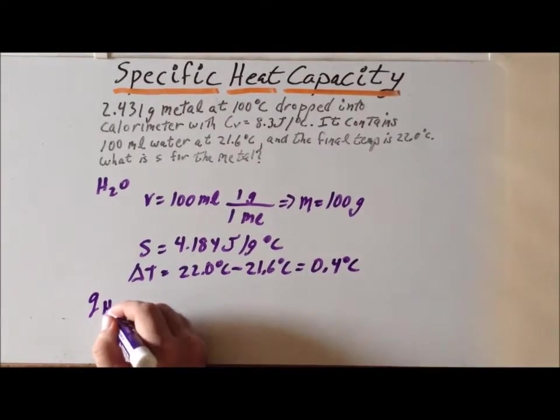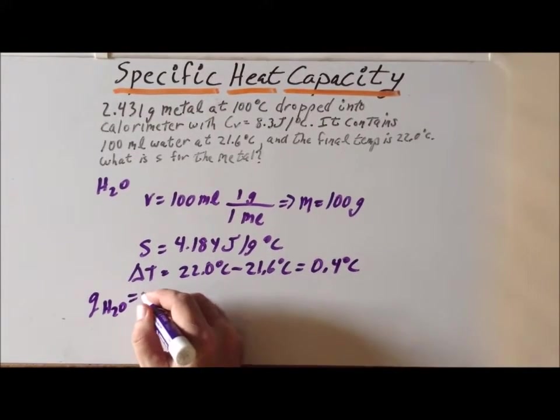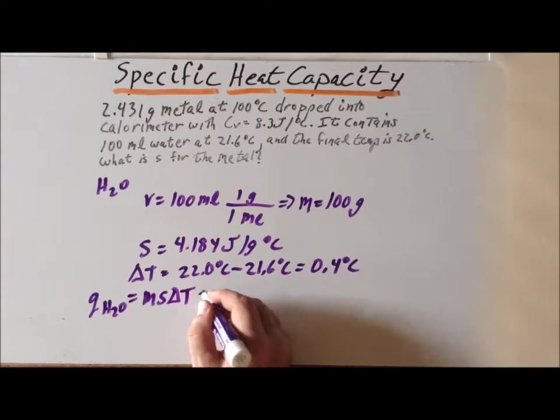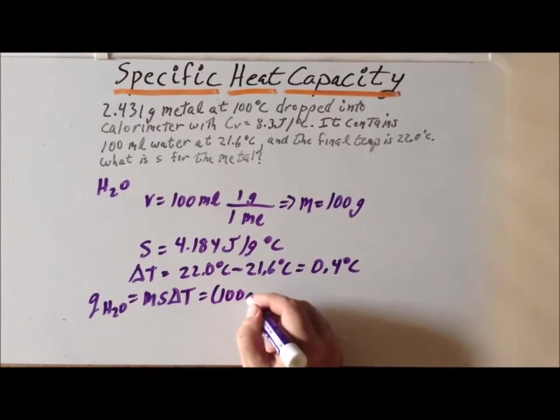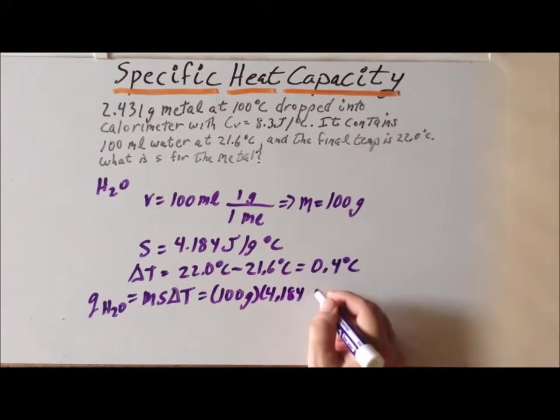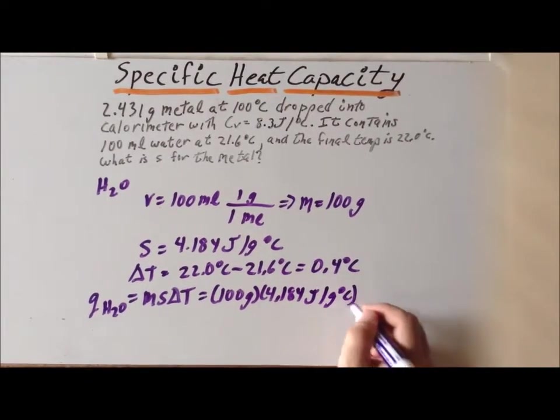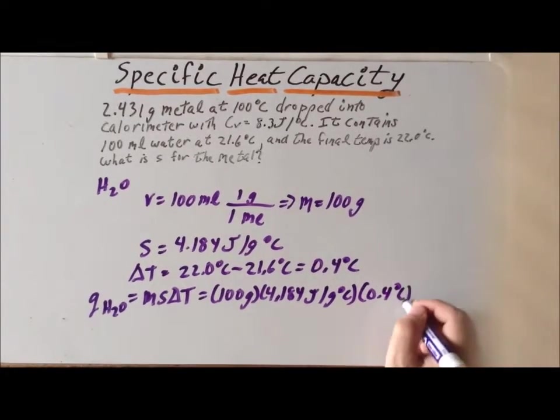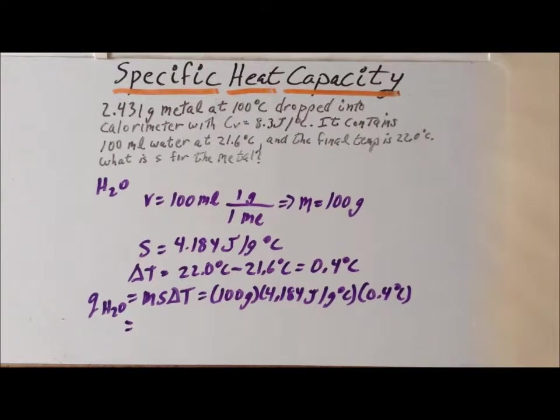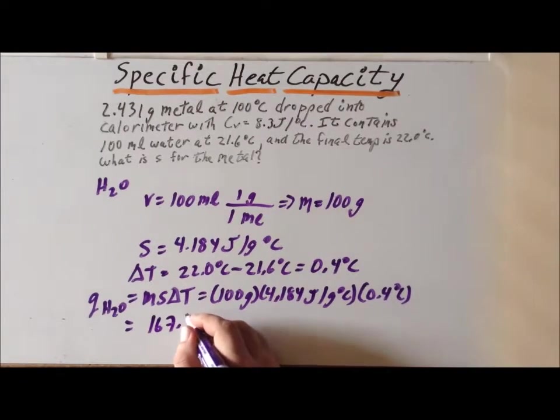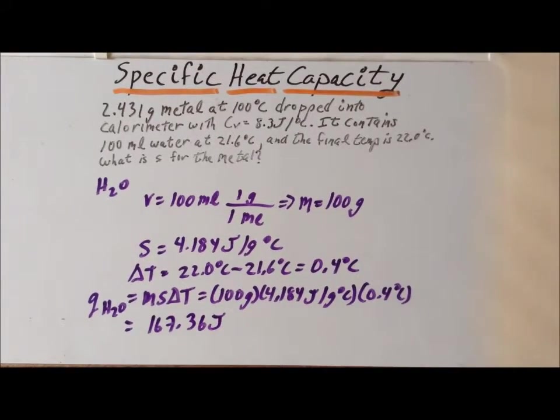Therefore, Q, with respect to the water, is equal to MS delta T, so that is 100 grams, times 4.184 joules per gram degrees centigrade, times 0.4 degrees centigrade. If we complete that calculation, our result is 167.36 joules for Q H2O.